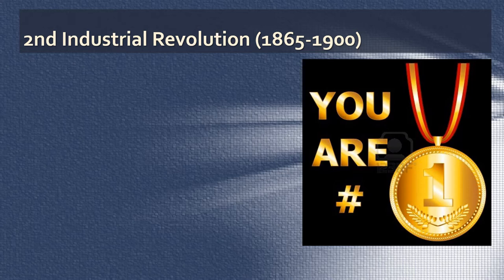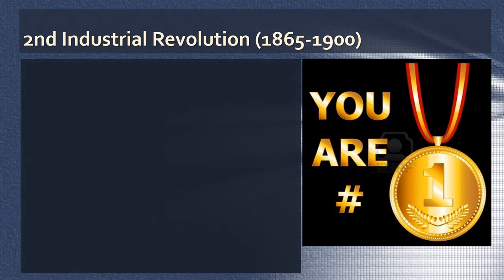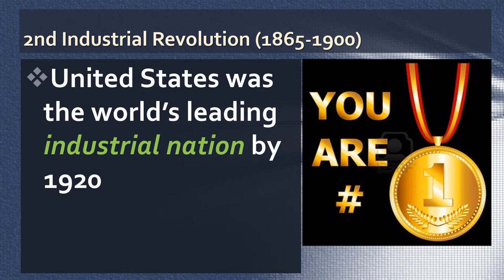So if there's a First Industrial Revolution and a Second Industrial Revolution, what's the difference? Should they actually be two, or should we just see them as one long industrial revolution? These are certainly important questions. However, there's one thing we can say clearly and unequivocally: the United States, no matter how you describe these revolutions, is the world's leading industrial nation by 1920. The U.S. is on top of industrial production in the world, and it's our job to figure out how the U.S. got there.